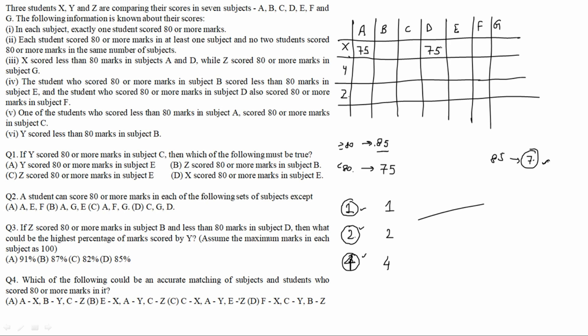Z scored 80 or more in subject G, so that entry is 85. Fourth point: the student who scored 85 in subject B also scored 75 in subject E — so B and E are linked: 85 in B means 75 in E. Also, the student who scored 85 in subject D also scored 85 in subject F — so D and F are linked: 85 in D means 85 in F.